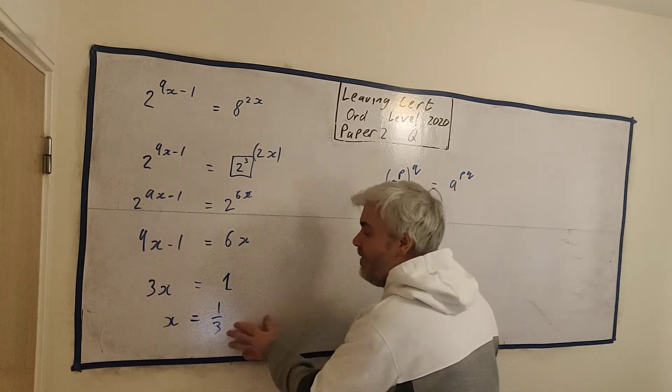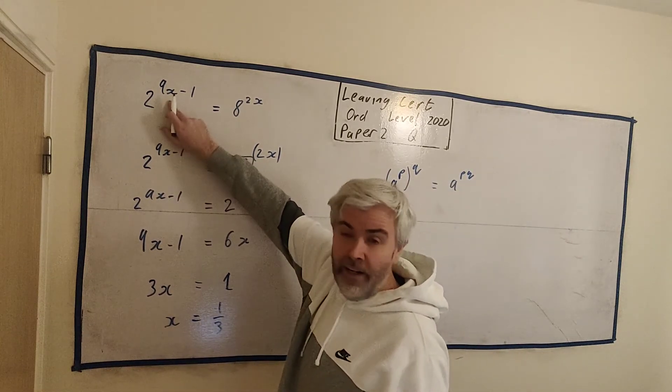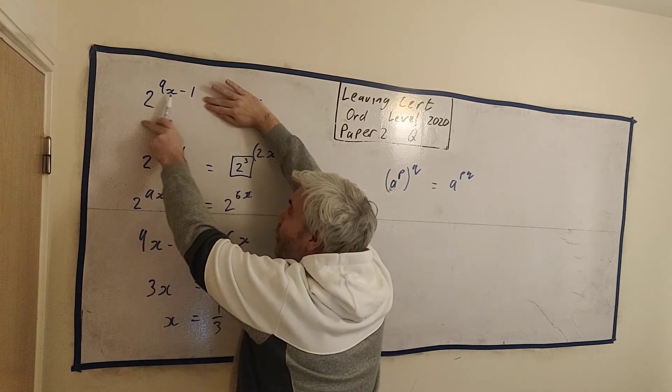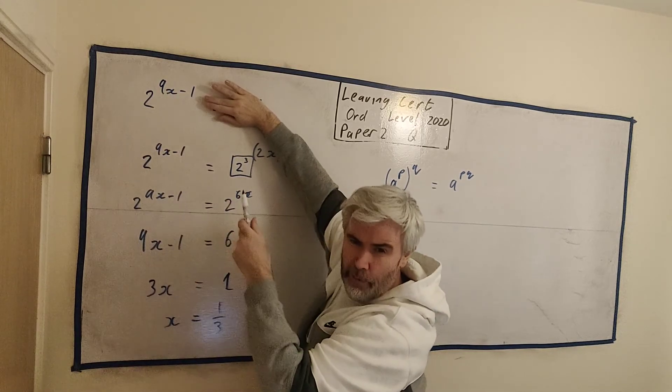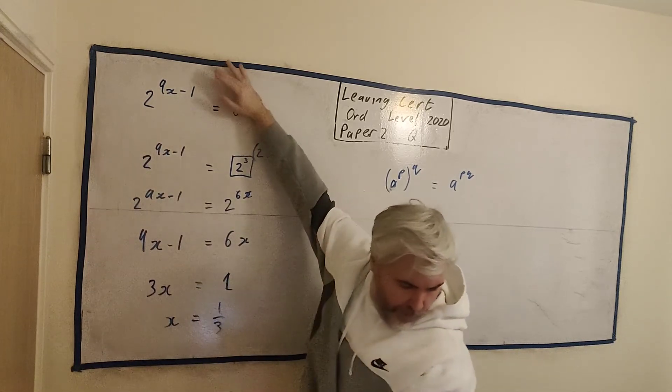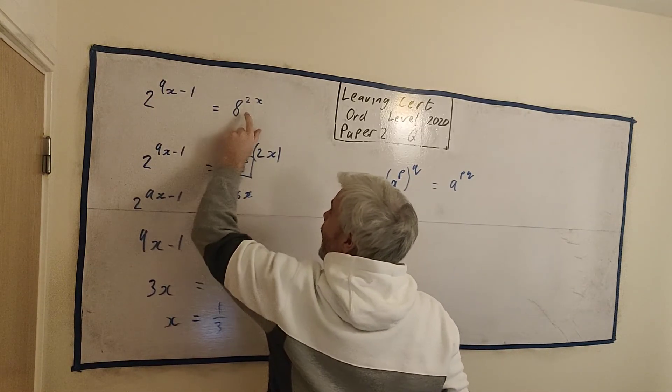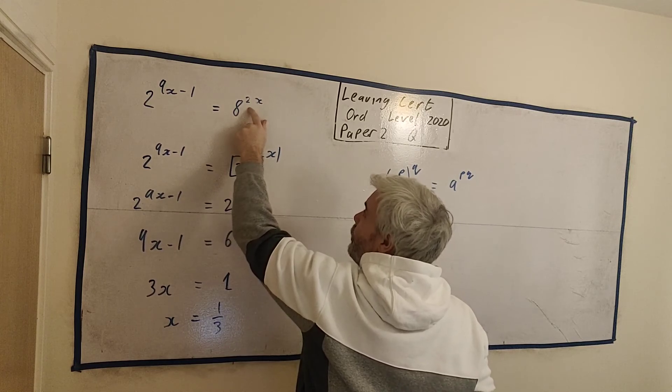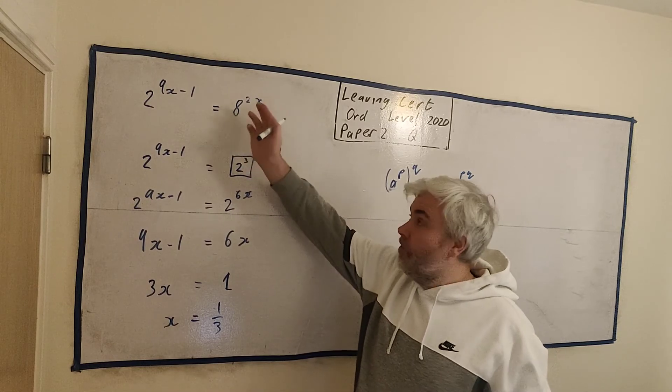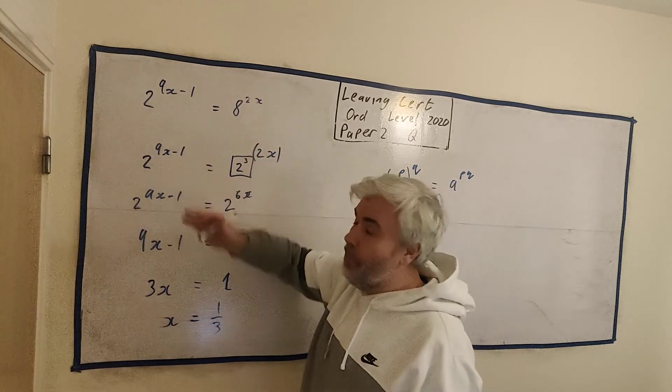And you can test this quite easily. I say x is equal to 1 over 3. Check if I'm right. Put it in on a calculator. Put the left-hand side in first. 2 to the power of 9 multiplied by 1 over 3 minus 1. Be careful when you put it in a calculator. Lots of brackets. See what number you get. I think you get 4 if you put it all in. And the same over this side. Put 8 to the power of 2 multiplied by 1 over 3. And yes, you will get 4 on that side. And that agrees. 4 does equal 4. Therefore, this was the correct number. No other number could you put in and make it work.